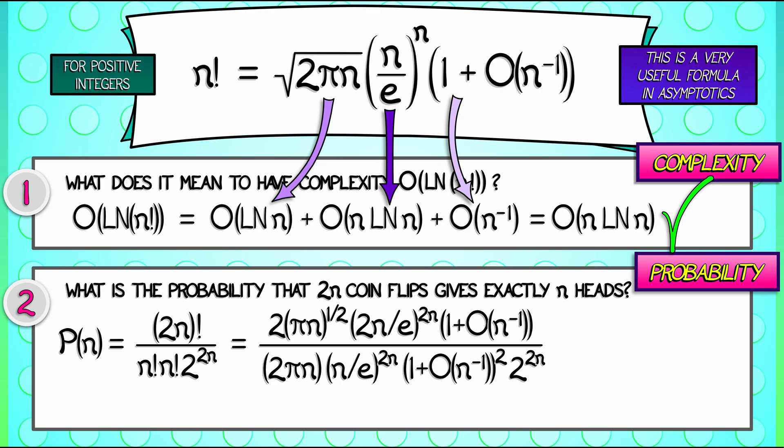And what we are left with in the end is 1 over square root of pi times n plus a leftover term that is in big O of n to the minus 3 halves. And this is really cool. This means that, yes, the probability does go to 0 as n goes to infinity, but it doesn't go to 0 very quickly. It goes like 1 over the square root of n.